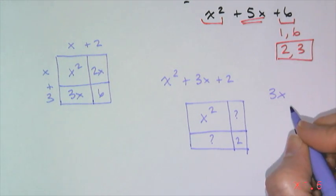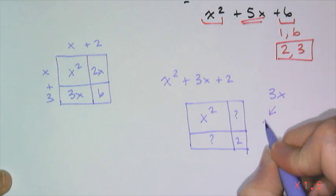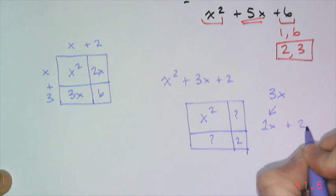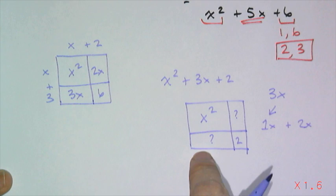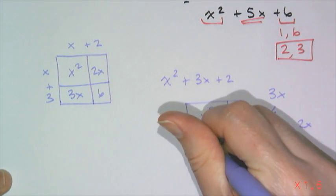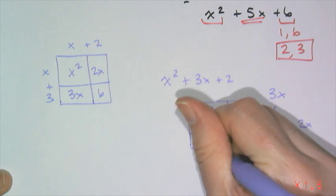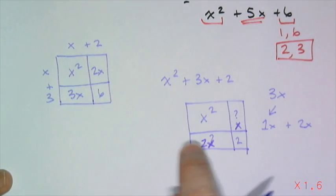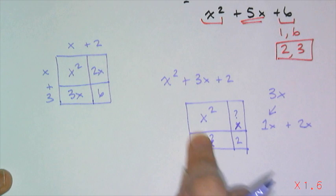And well, I can't use 0 and 3. It has to be 1x plus 2x. So what goes in these two rectangles here are x and then 2x. And once you have your little rectangles filled in.